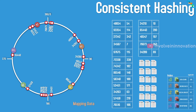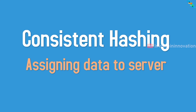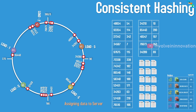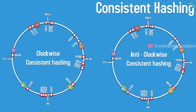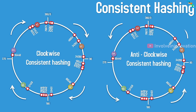Now we have both servers and data mapped onto the ring. We assign data to servers using consistent hashing, which can be clockwise or anti-clockwise. Using clockwise: each data point maps to the nearest server in the clockwise direction. For example, data 76673 maps to server 1 as its nearest clockwise server. Similarly, 34567, 34210, 48654, and 34263 all map to server 1. We repeat this for all data points. If we map to the nearest left-hand server instead, that would be anti-clockwise consistent hashing.